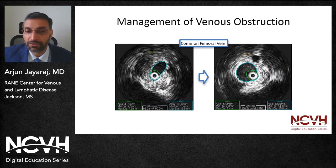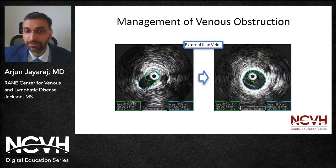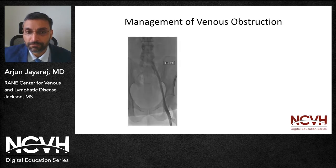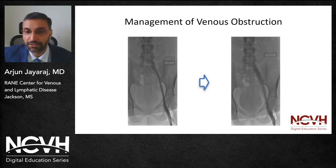The common femoral has gone from 109 to 175 millimeters squared luminal area, the external iliac from 116 to 188, and the common iliac vein from 116 to 201 — all above the cutoff previously mentioned. And here is the completion venogram: the initial one and this is post-angioplasty and stenting.